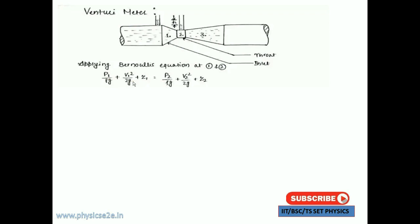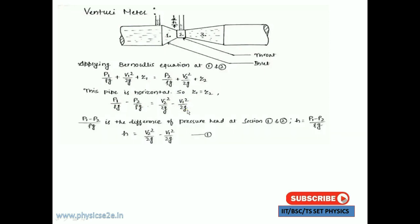Since this pipe is horizontal, z1 equals z2. The z1 and z2 values represent height compared to the gravity level; since both are the same, they cancel. Rearranging the equation: p1/ρg minus p2/ρg equals v2²/2g minus v1²/2g.